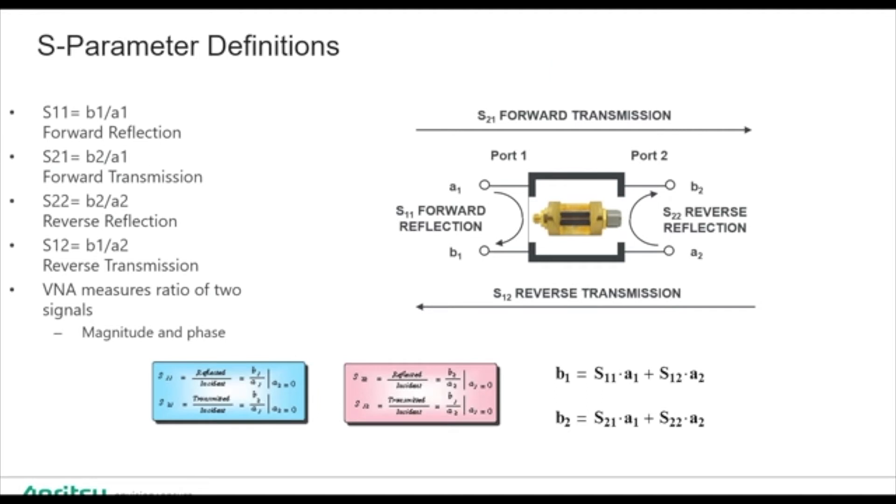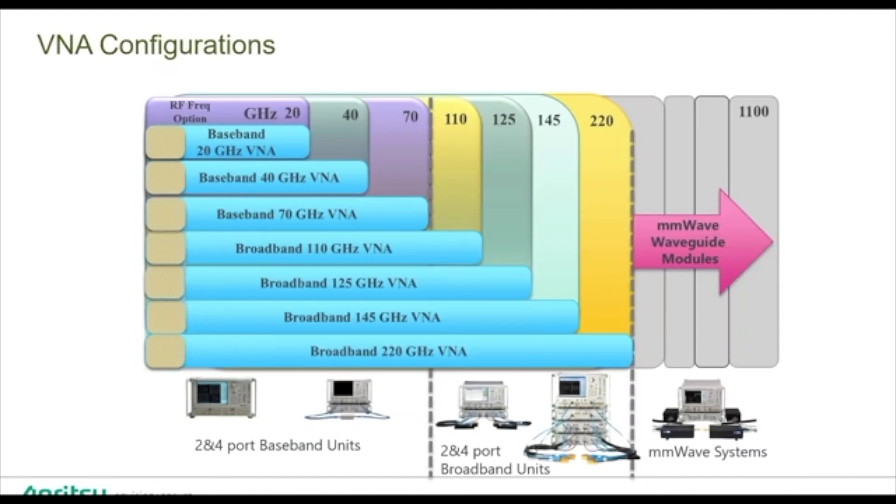If you actually want to understand the math behind the S parameter measurements, the formulas for S11, S21, S22, and S12 are right there. If you look at the front of a VNA, those will always be labeled, and that helps with the math that's going to be performed. We utilize broad spectrum in our daily lives every day, whether it's automotive radar, communication systems. There's obviously spectrum utilized, and we have a VNA that can cover all of that spectrum.